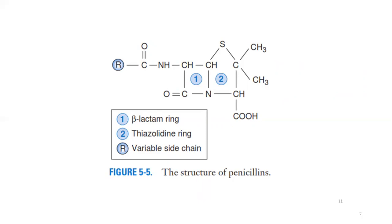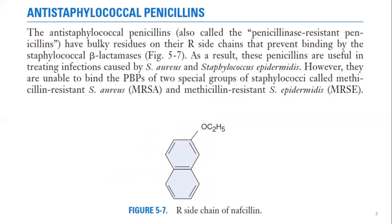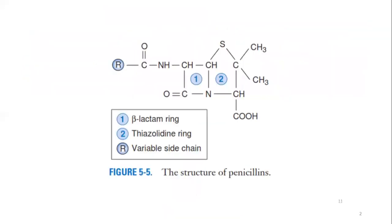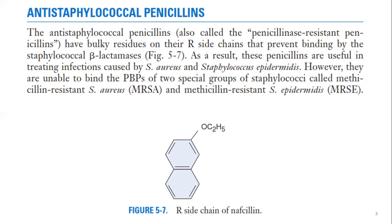Since bacteria were synthesizing beta-lactamases, scientists modified the R group. They placed a bulky group on the R side chain, as shown in the image. The function of this bulky group is to protect the beta-lactam ring. Due to this bulkiness, the beta-lactam ring is protected from beta-lactamases. So although Staphylococcus aureus and Staphylococcus epidermidis still synthesize beta-lactamases, the enzymes cannot act because the ring is now protected by this side chain. It was a very good discovery.